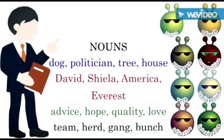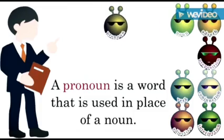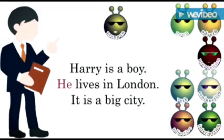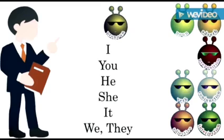Now, Pronoun, can you tell me a little about yourself? Sure! I'm Pronoun. A pronoun is a word that is used in place of a noun. Look at these sentences: 'Harry is a boy. Harry lives in London. London is a big city.' Now with pronouns: 'Harry is a boy. He lives in London. It is a big city.' The words he and it are pronouns — they replace the nouns Harry and London. Words like I, you, he, she, it, we, and they are pronouns. You'll learn more about pronouns in another video.